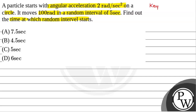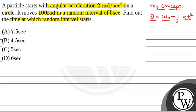First of all, we will see what key concept will be used to solve this question. The key concept is theta — the angular displacement — which is equal to omega-naught times t plus half alpha t squared, where omega-naught is the initial angular velocity, alpha is the angular acceleration, and t is the time.